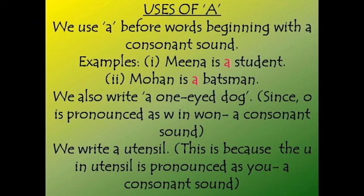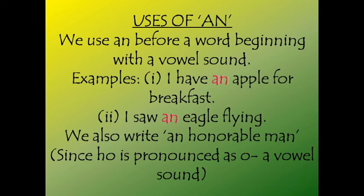We also write 'a one-eyed dog' because O in 'one' is pronounced as a W sound, and W is a consonant — so it is an exception. We say 'a one-eyed dog' instead of 'an one-eyed dog'. Similarly, we write 'a utensil' because utensil is pronounced with a Y sound at the start, so we say 'a utensil' rather than 'an utensil'.